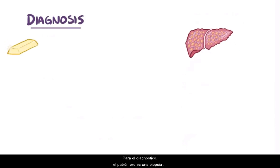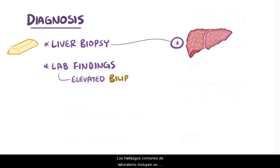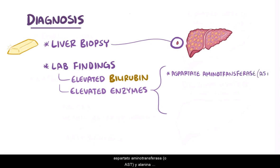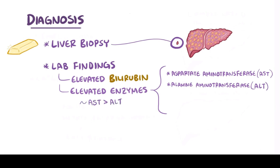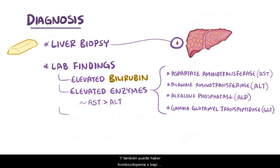For diagnosis, the gold standard is a liver biopsy — taking a tiny sample of liver tissue and examining it under a microscope. Common lab findings include elevated serum bilirubin, as well as elevated liver enzymes like aspartate aminotransferase (AST) and alanine aminotransferase (ALT), where AST is usually more elevated than ALT. Also, alkaline phosphatase (ALP) and gamma-glutamyl transpeptidase (GGT) can also be elevated, and there might be thrombocytopenia, or low platelet count.